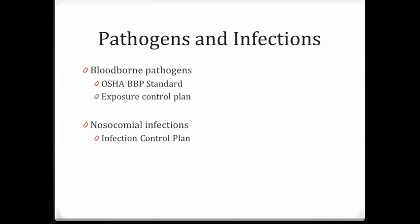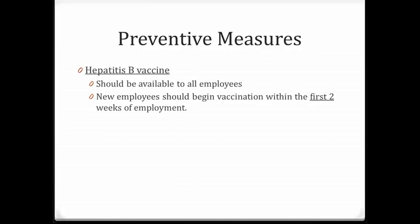Nosocomial infections are infections acquired by a patient after admission to a healthcare facility. The infection control plan indicates how to break the chain of infection. Hepatitis B vaccines should be available to all employees; new employees should be given vaccination within two weeks of employment. Hepatitis B is given in three doses: the initial dose, the second dose one month later, and the third dose six months from the initial dose.